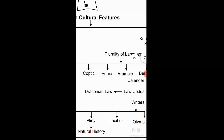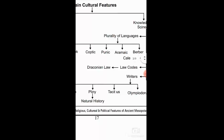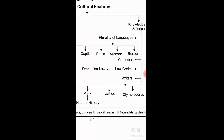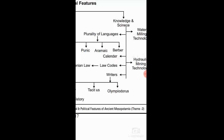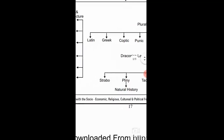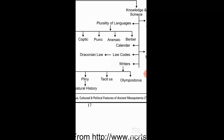The second factor is knowledge and science, which is truly remarkable in Roman society. There was a plurality of languages — as the Roman Empire extended over a vast area, people spoke a variety of languages, much as we see in India today. They had knowledge of water milling technology, using water power for irrigation and other purposes, showing they were technically sound. The languages known included Latin, Greek, Coptic, Punic, Aramaic, and verbal languages, showing how linguistically rich the Romans were.